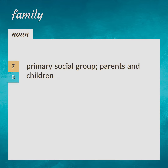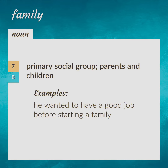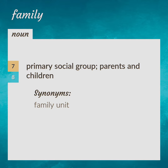Definition seven: primary social group — parents and children. Example: he wanted to have a good job before starting a family. Synonym: family unit.